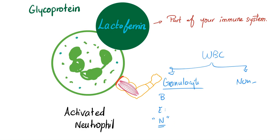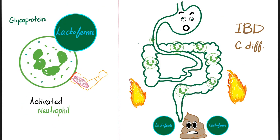This neutrophil, especially when it's activated, expresses something called lactoferrin. So whenever you see an elevated level of lactoferrin, it means there are tons of activated neutrophils, probably due to a bacterial infection. Imagine a patient with inflammatory bowel disease such as Crohn's disease or ulcerative colitis, or a patient with Clostridium difficile colitis, or Salmonella, Shigella, Campylobacter jejuni, etc. What all these patients have in common is inflammation in their intestines.